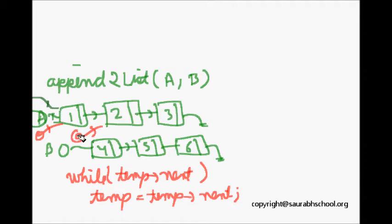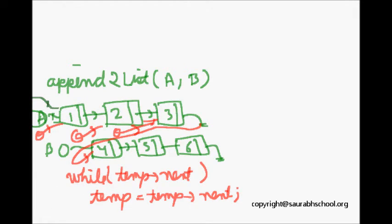We will go to this place. Temp next is not null now also, so we will make temp equal to temp next. We move to the third node. Now what happens: temp next is equal to null. So the thing to append means what? We should make this temp next now equal to this B pointer, and we are done. So this is about appending to list, and now we will see the code.